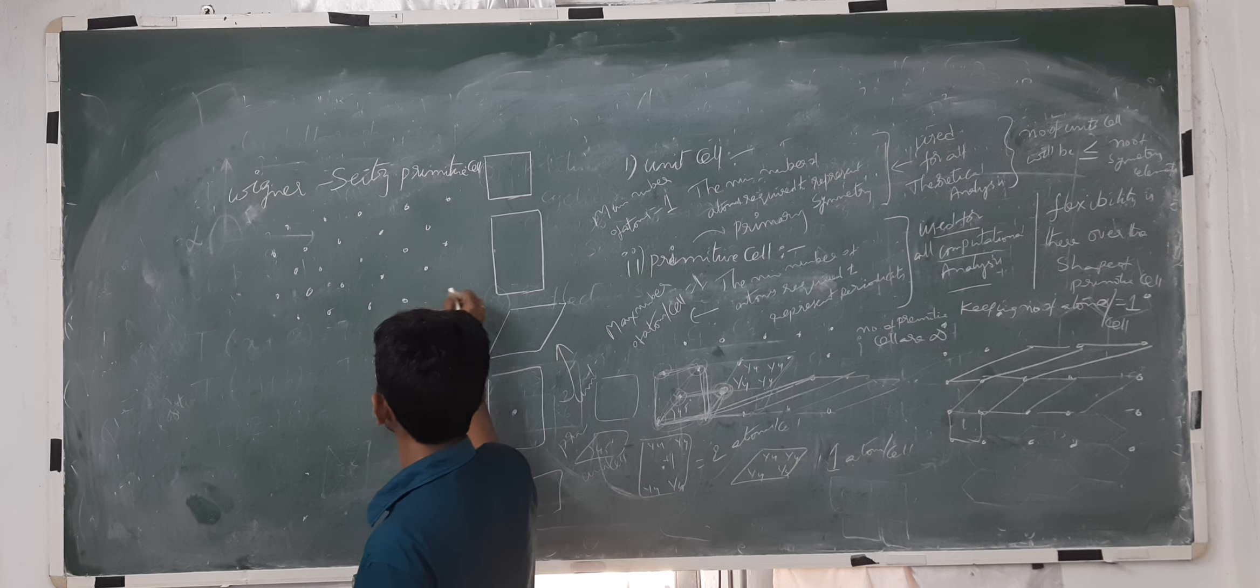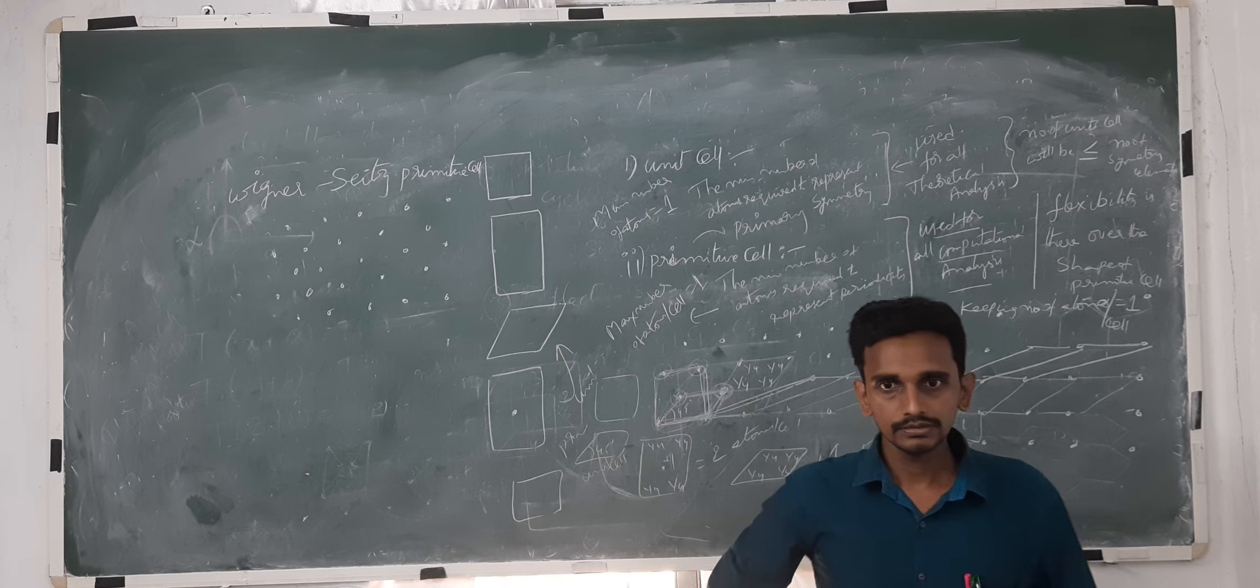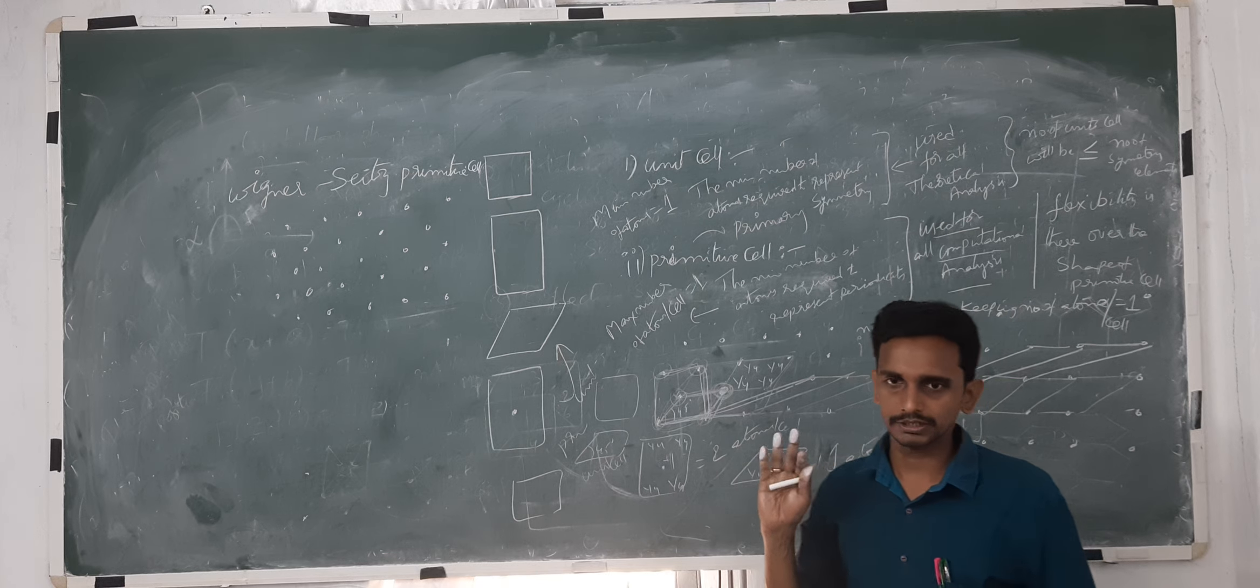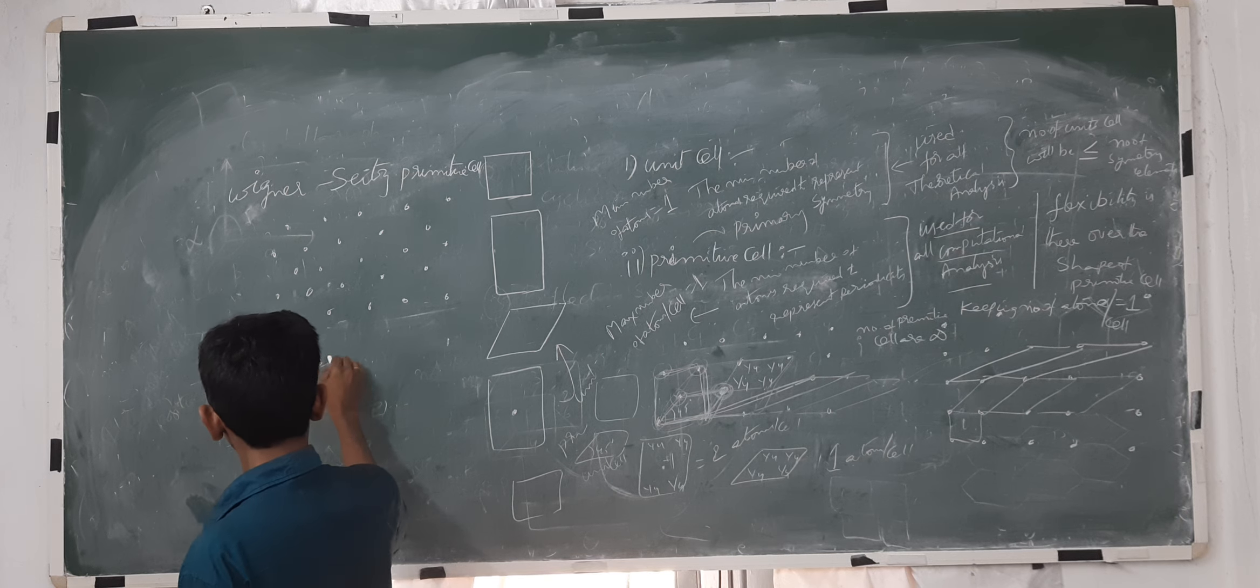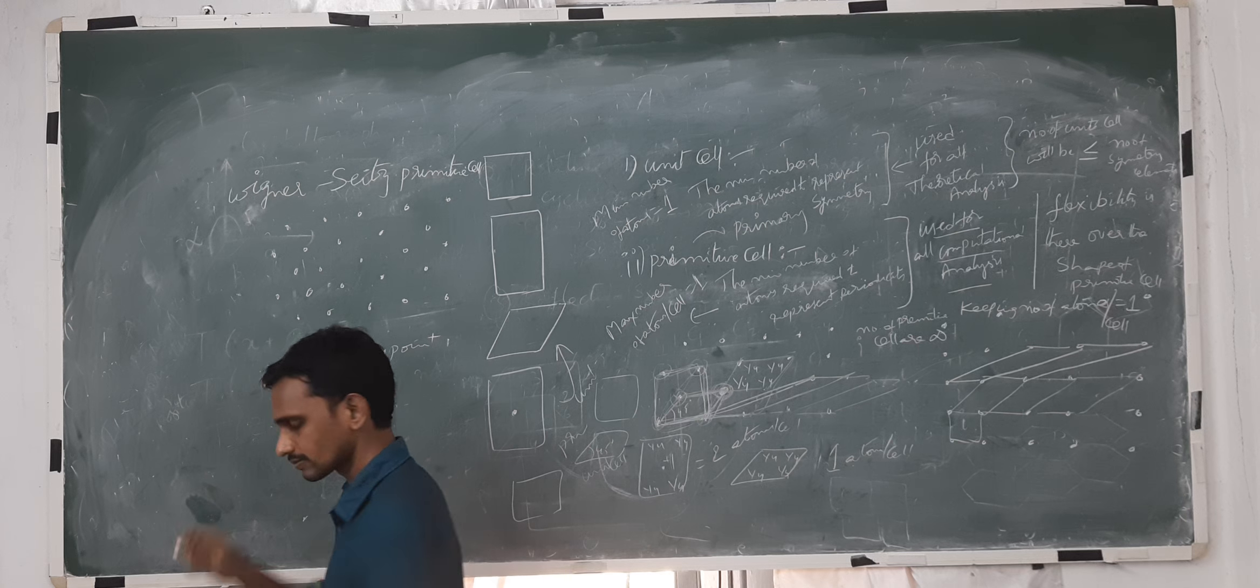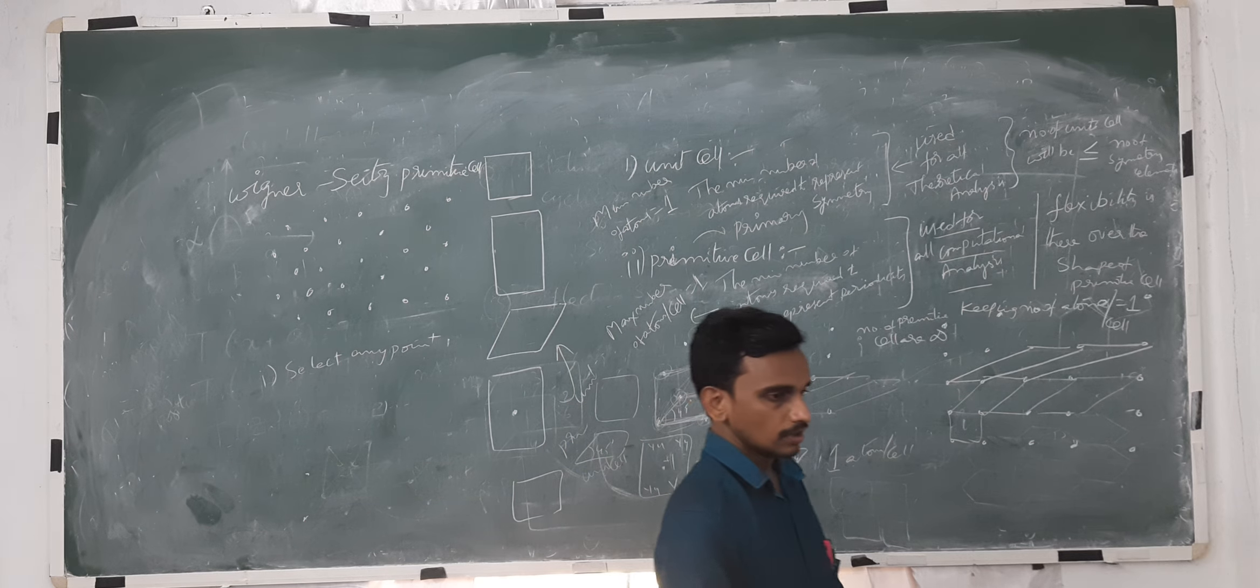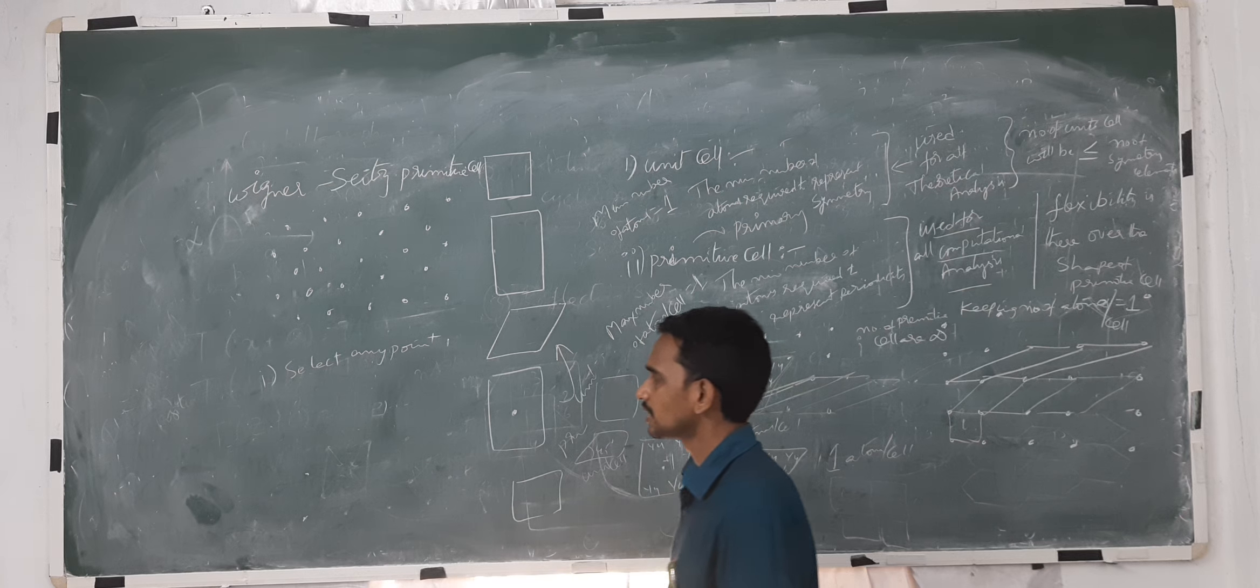If you have a given set of points like this, we are going to select any point. First rule is, select any point. Draw lines to nearest neighbors.